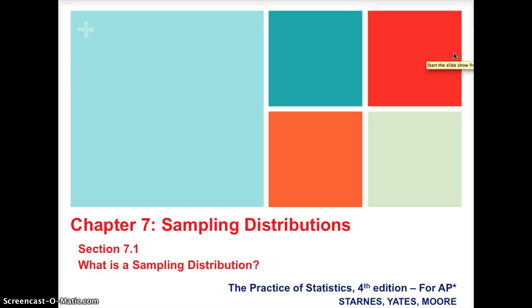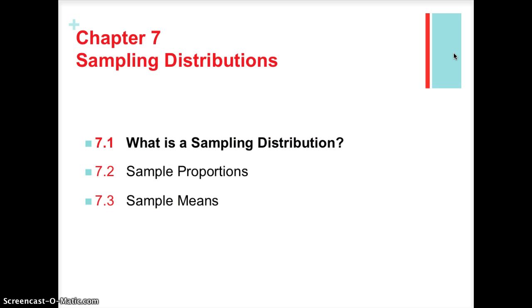Hi ladies and gentlemen, this is Ms. Skokin. We're back with AP Statistics. We're going to be talking about Chapter 7, Sampling Distributions. Section 7.1 is going to give us the definition of sampling distributions and a lot of vocabulary. Once we get to Sections 7.2 and 7.3, we're going to go further into detail about different types of distributions, whether we're looking at proportions for categorical variables or means for numerical variables.